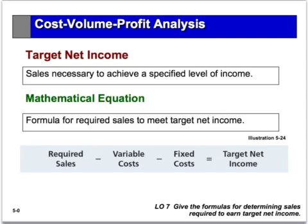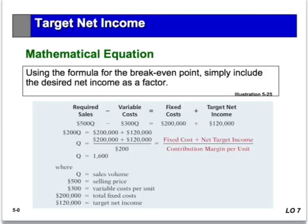For the equation, required sales equals total sales minus variable cost minus fixed cost, which leaves the target net income. For example, using our camcorder example: the selling price is $500, the variable cost is $300, the fixed cost is $200, and in this case we want a profit of $120,000.